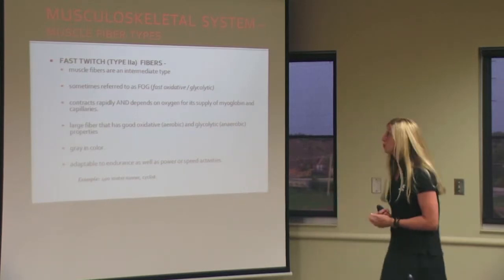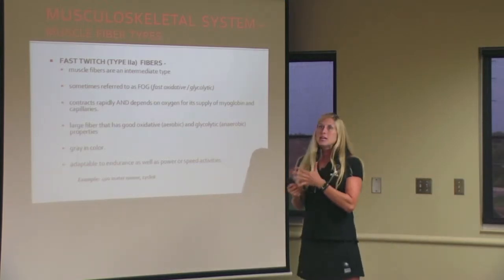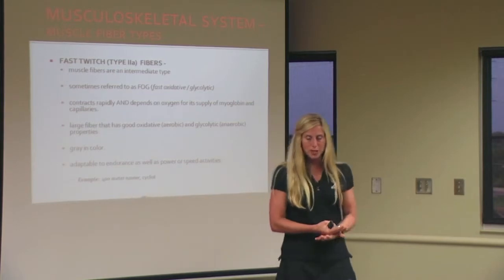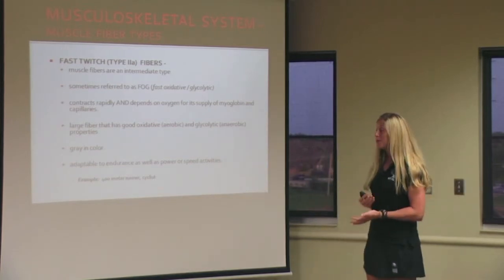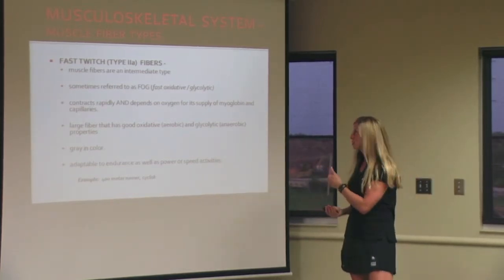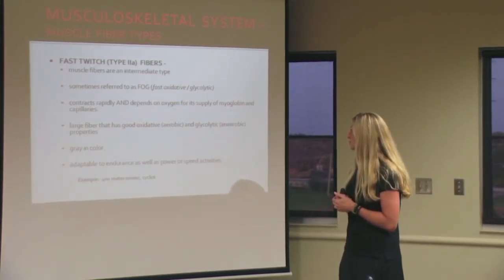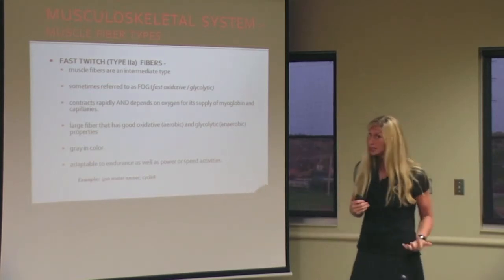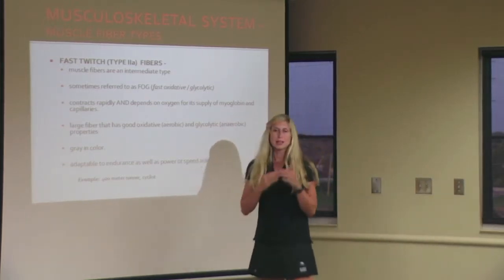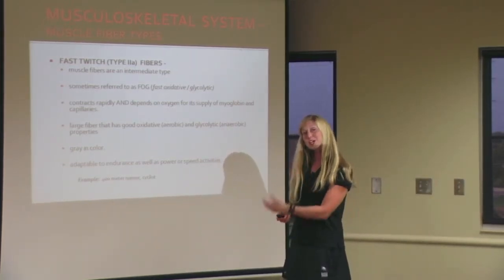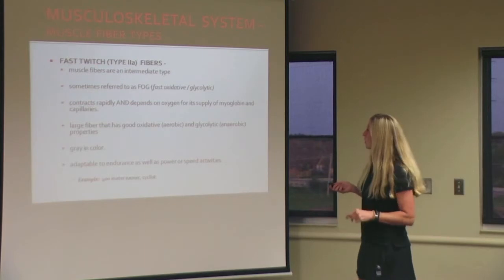Next are the fast twitch fibers — also called type 2a; slow twitch is type 1. Type 2a are an intermediate fiber: they have endurance properties and they have power and speed properties. They can contract rapidly, but they can also rely on oxygen for energy. It's a large fiber with good oxidative properties and also glycolytic properties — so it can be fast and it can last a long time. Color-wise, they are gray — they have some blood, but that's not the only way they work.